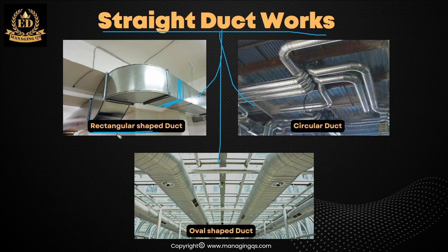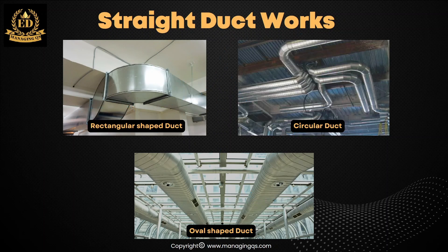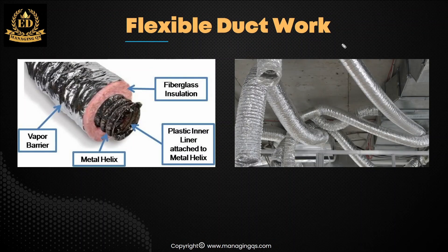The second one is the circular duct — the duct appearance looks like a circular shape, so that's why we call it a circular duct. The third one is the oval shape — the duct shape looks like an oval. So under straight ductwork we have three types: rectangular, circular, and oval.